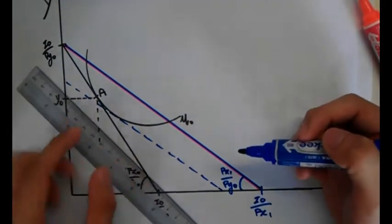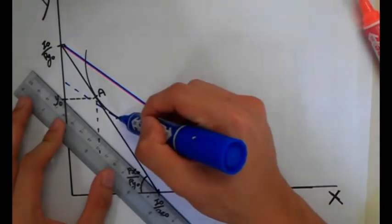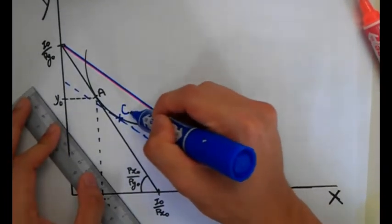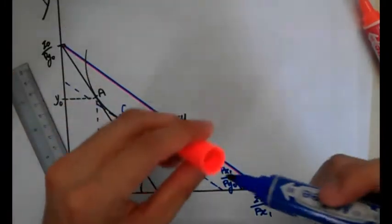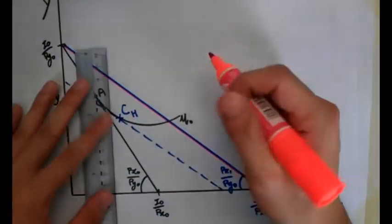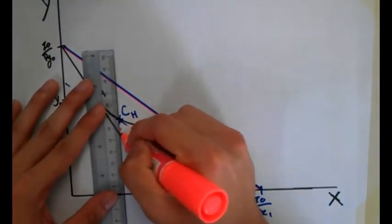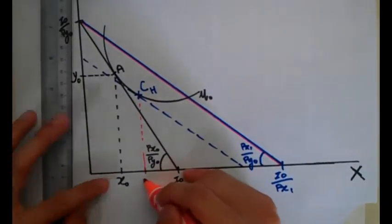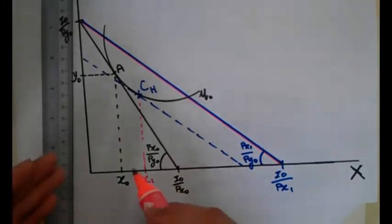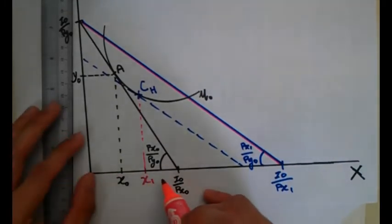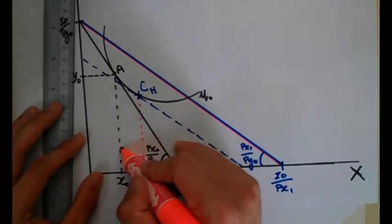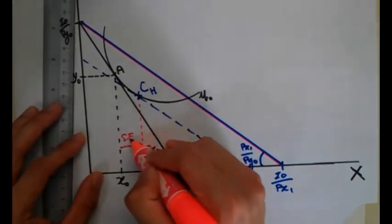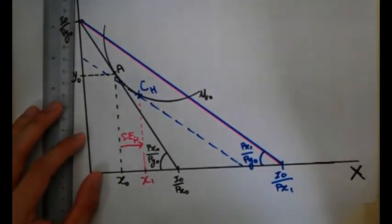We will mark the point of tangency to be point C under the Hicksian definition of real income. So I can now mark out the substitution effect. Initially our individual was at X0, and the substitution effect has brought them up to X1. So from X0 to X1 is the substitution effect under the Hicksian definition of real income.